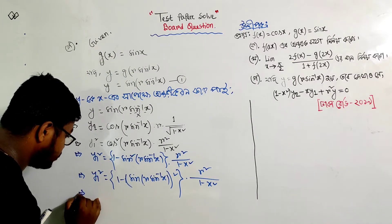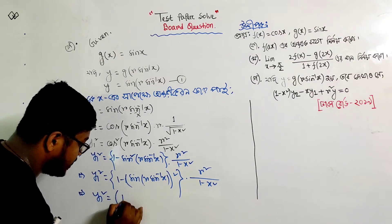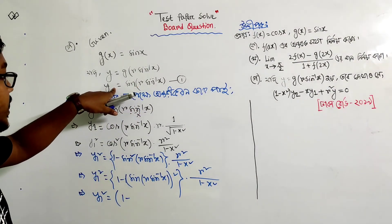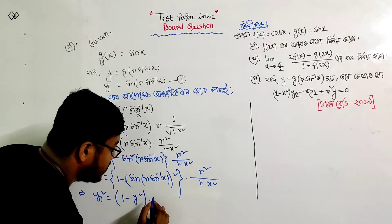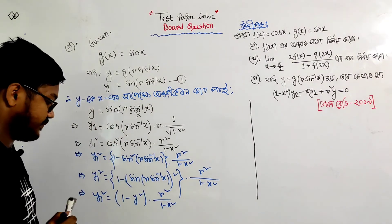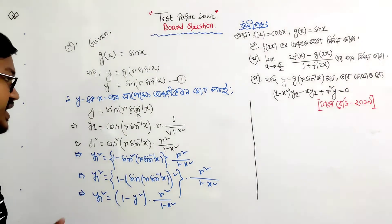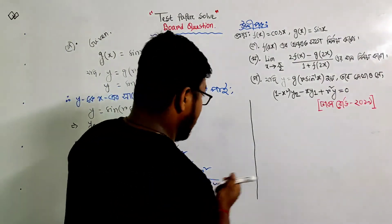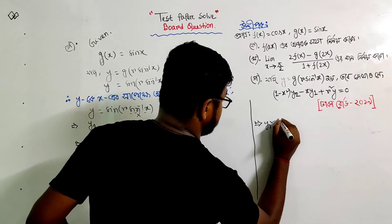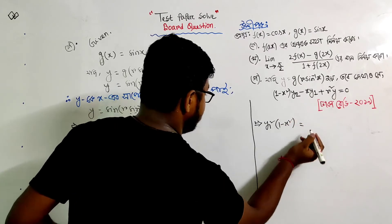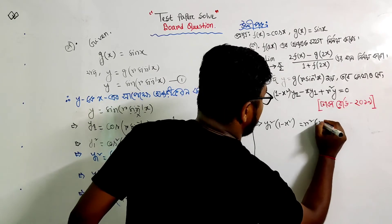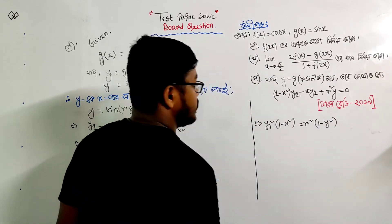That means the value of y1 squared means 1 minus sin(r·sin⁻¹(x)) into y. So y1 squared equals R squared divided by 1 minus x squared, which gives y1² times (1 minus x²) equals r² times (1 minus y²).